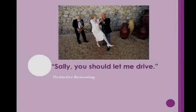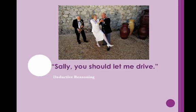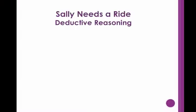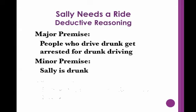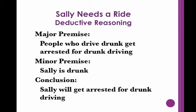Now let's examine a more common form of the argument. Say you are at a party and you hear Sam telling Sally that she should let him drive because she has had too much to drink. He is using deductive reasoning, and if we put the unstated portion of his argument in the form of a syllogism, it would look like this: People who drive drunk get arrested for drunk driving. Sally is drunk. Therefore, Sally will get arrested for drunk driving.